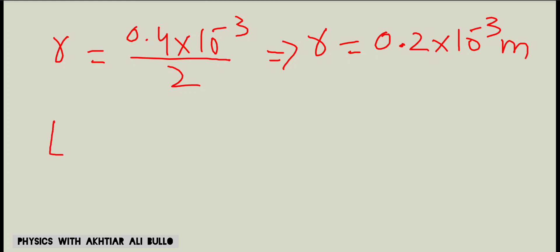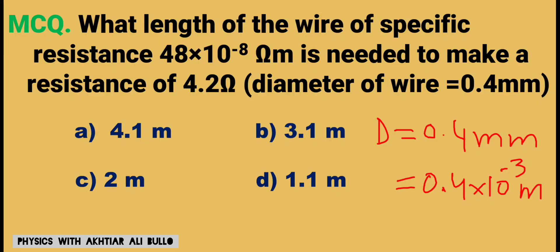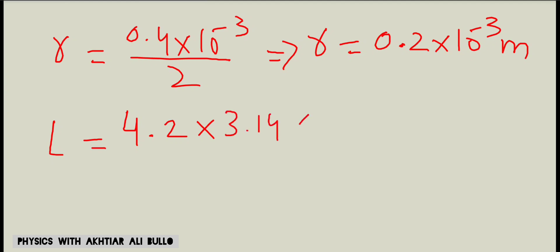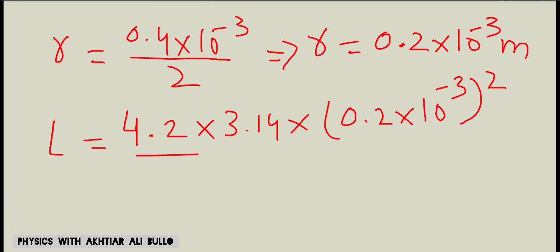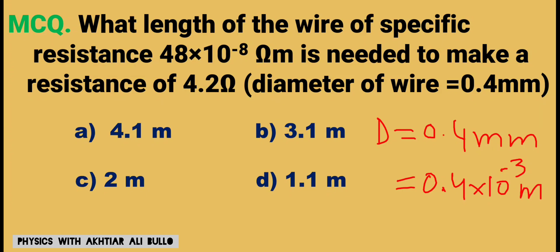Now substituting the given values into L = R × πr² / ρ: resistance R = 4.2 ohm, π = 3.14, radius r = 0.2 × 10⁻³ meters, and resistivity ρ = 48 × 10⁻⁸ ohm·meter. So L = 4.2 × 3.14 × (0.2 × 10⁻³)² / (48 × 10⁻⁸).